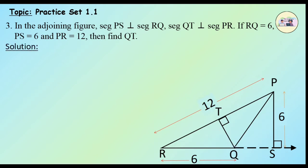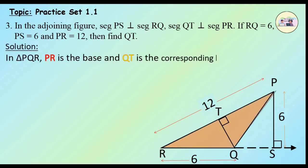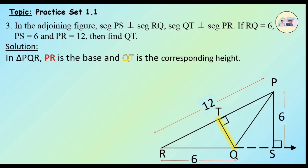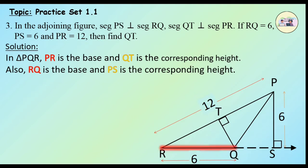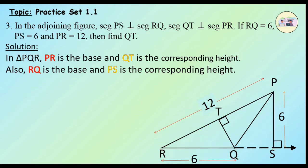As you can see in the figure, in triangle PQR, if we consider PR as the base, then QT is the corresponding height. And if we consider RQ as the base, then PS is the corresponding height. Therefore, the area of triangle PQR can be calculated using two different bases and their corresponding heights.